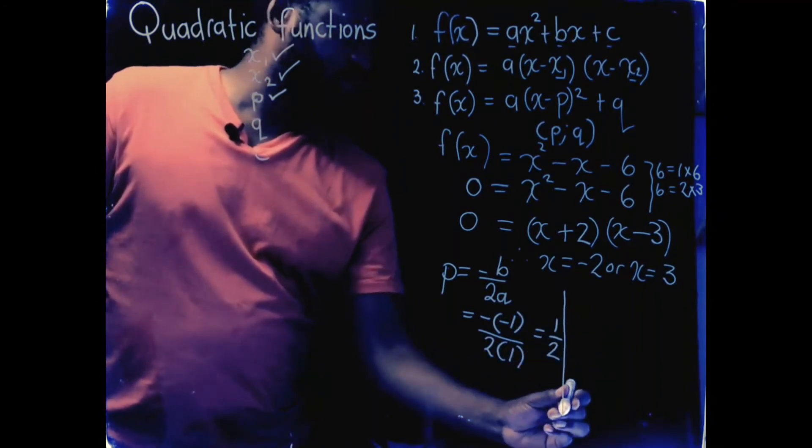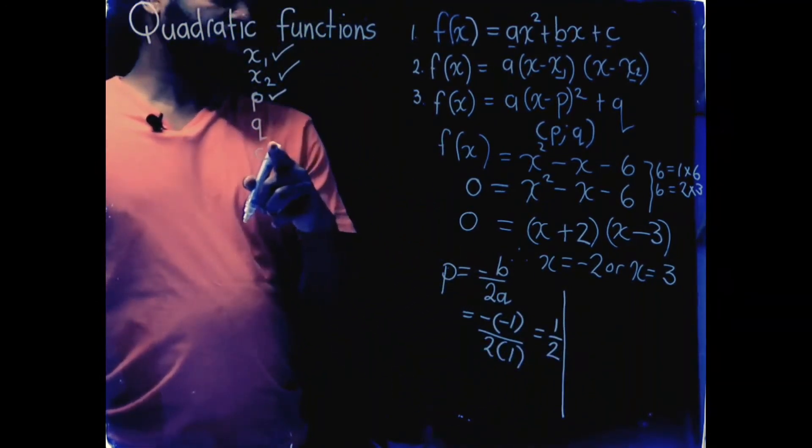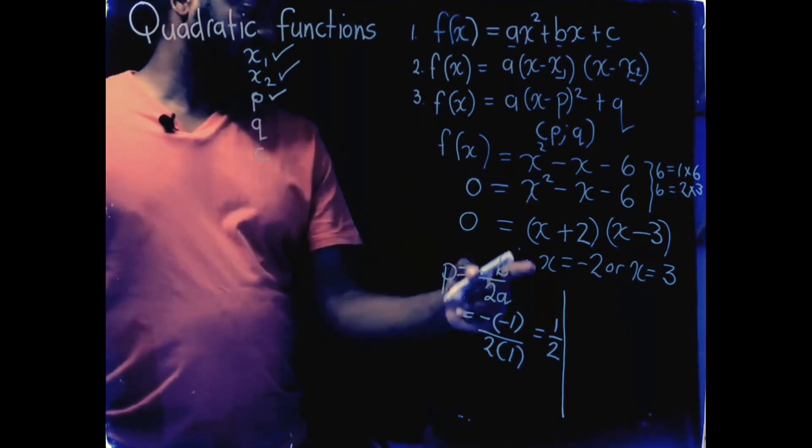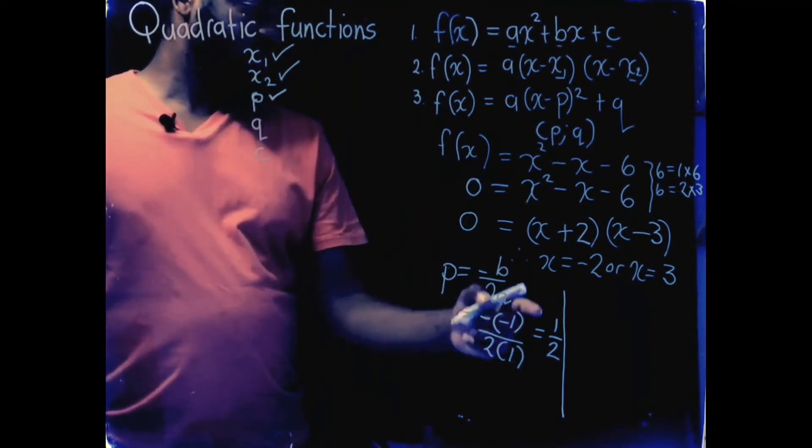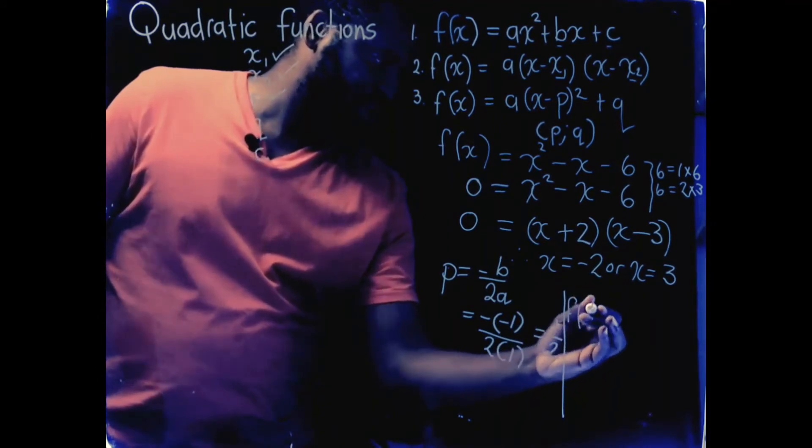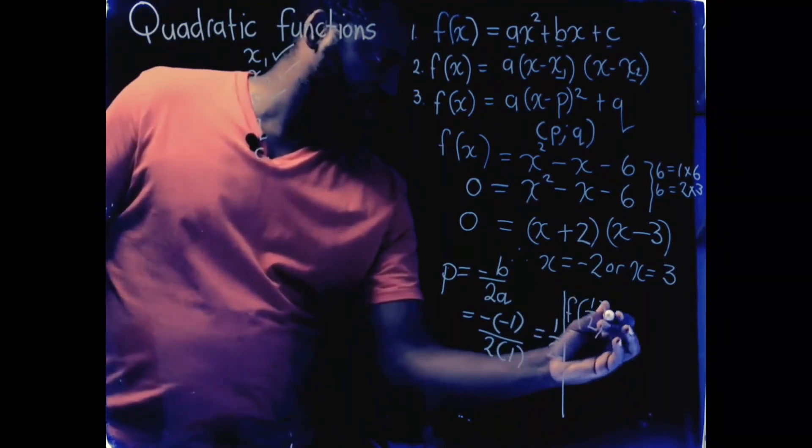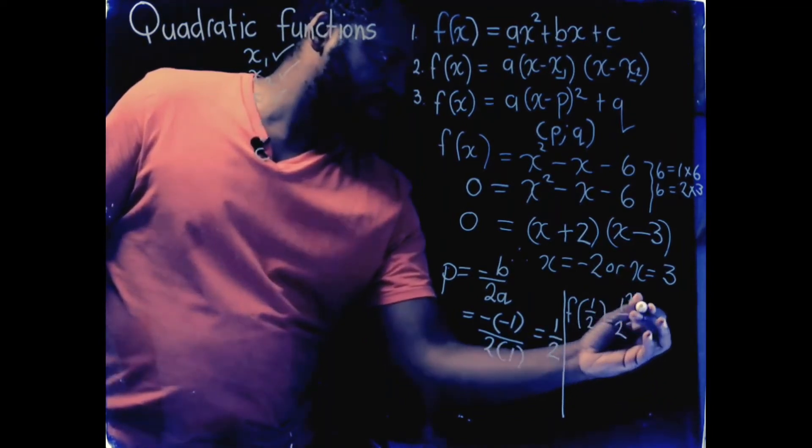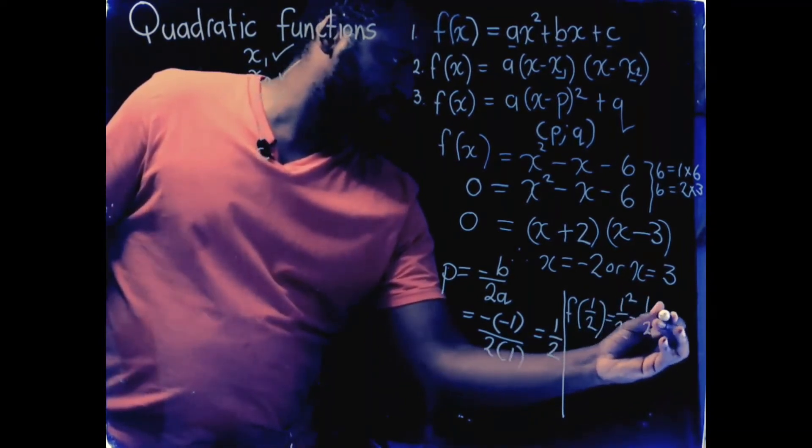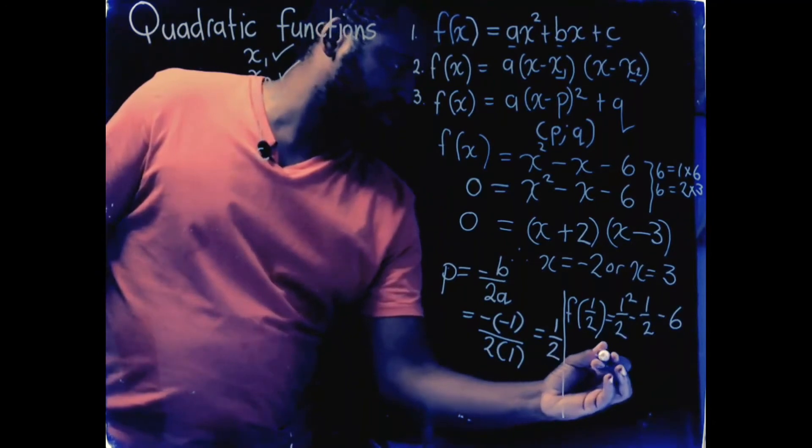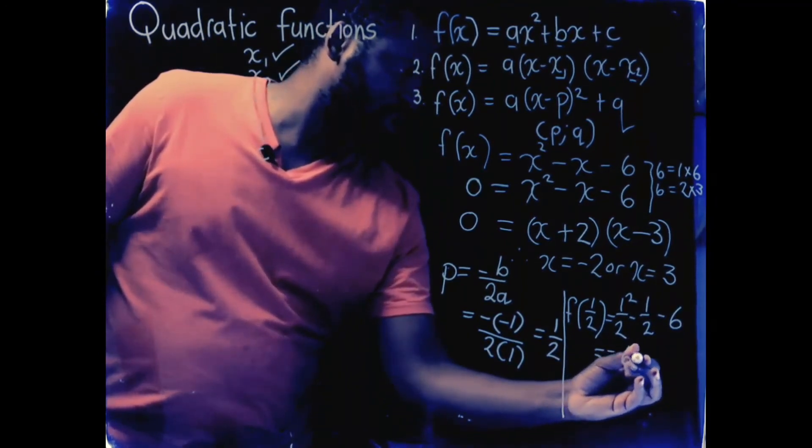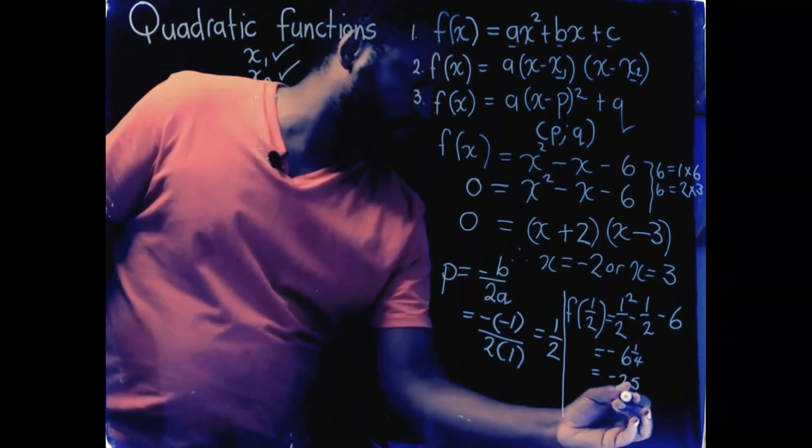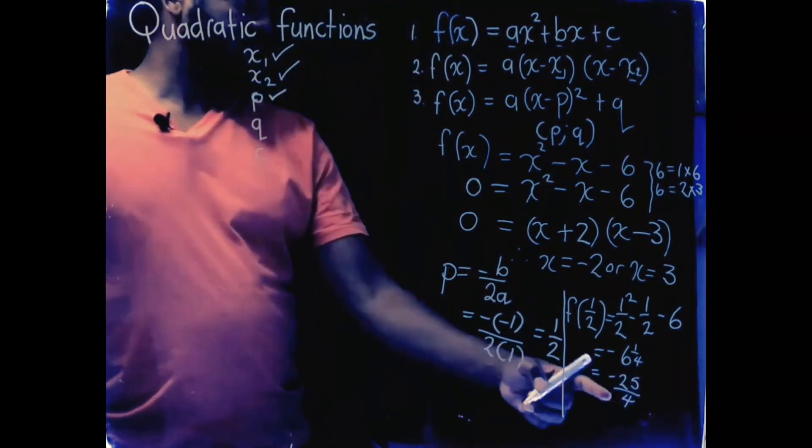Once I get the p value, I can easily work out the q by substituting into the function when x is a half. So, the function value when x is a half is going to be a half squared minus a half minus 6. This will give you negative 6 and a quarter which is the same as negative 25 over 4.